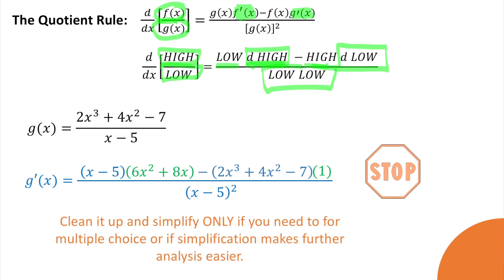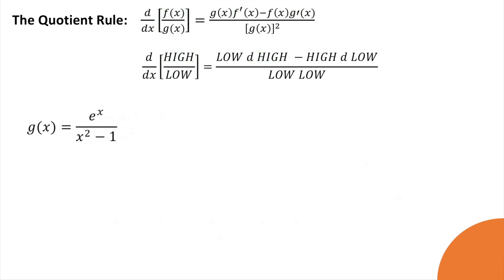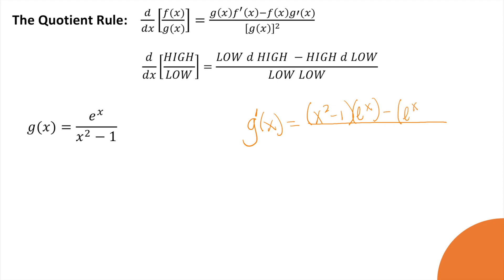Let's try this one. I'll write and talk as I do it. g prime of x equals low — just the low function written out — times d-high, the derivative of the top, which is just e to the x again. Low d-high minus high, that's e to the x, times d-low — the derivative of the low function is 2x — all over low-low: x squared minus 1, quantity squared.